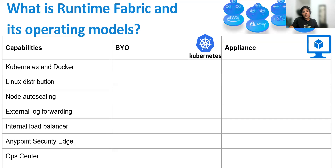Let's compare capabilities across both deployment options — the appliance model and the Kubernetes model. For Kubernetes and Docker: in the appliance flavor, all Kubernetes clusters and Docker are included inside the software provided by MuleSoft. It will have its own Kubernetes and its own Docker. You cannot select your own Kubernetes or Docker versions — that is fixed and controlled by MuleSoft.